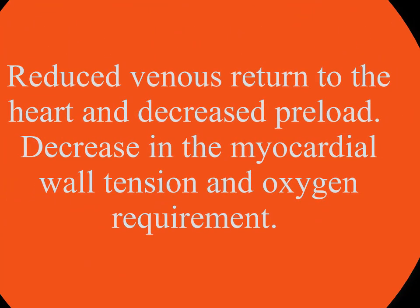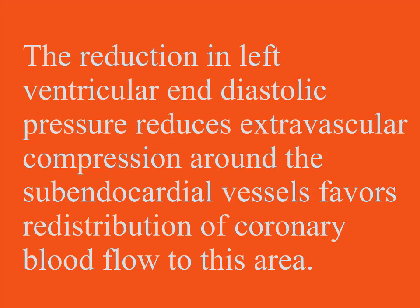Nitroglycerin dilates both venous smooth muscle and arteriolar smooth muscle; however, the effect on the venous capacitance system predominates. Dilation of the capacitance vessels leads to pooling of blood in the veins and reduced venous return to the heart, decreasing preload. Reduction in ventricular pressure results in a decrease in myocardial wall tension and oxygen requirement. The reduction in left ventricular end-diastolic pressure also reduces extravascular compression around the subendocardial vessels, favoring redistribution of coronary blood flow to this area.